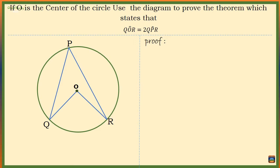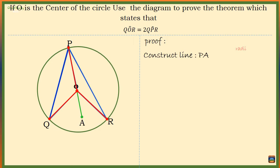Let's start the proof by constructing a line from the point P through the center O to a point A inside the circle. Now we have two triangles: POQ and POR. Since O is the center of the circle, OP is a radius of the circle, and OQ and OR are also radii.